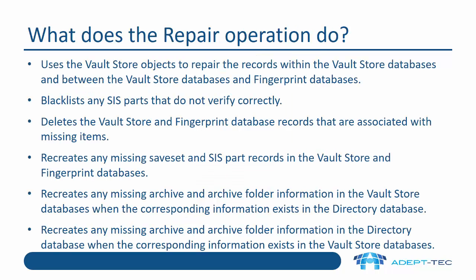So what does the repair operation do? It can do a number of things. It can use the Vault Store objects — i.e. the items in the Vault Store partition — to repair the records within the Vault Store database and between Vault Store databases and fingerprint databases. It can blacklist any sys parts that don't verify correctly, forcing the archiving agent to archive a new version if it sees that sys part again. It deletes Vault Store and fingerprint database records associated with missing items in the Vault Store partition. It recreates any missing save sets and sys part records in the Vault Store fingerprint databases. It can also recreate any missing archive and archive folder information in the Vault Store databases when the corresponding information exists in the directory database, or the other way around.